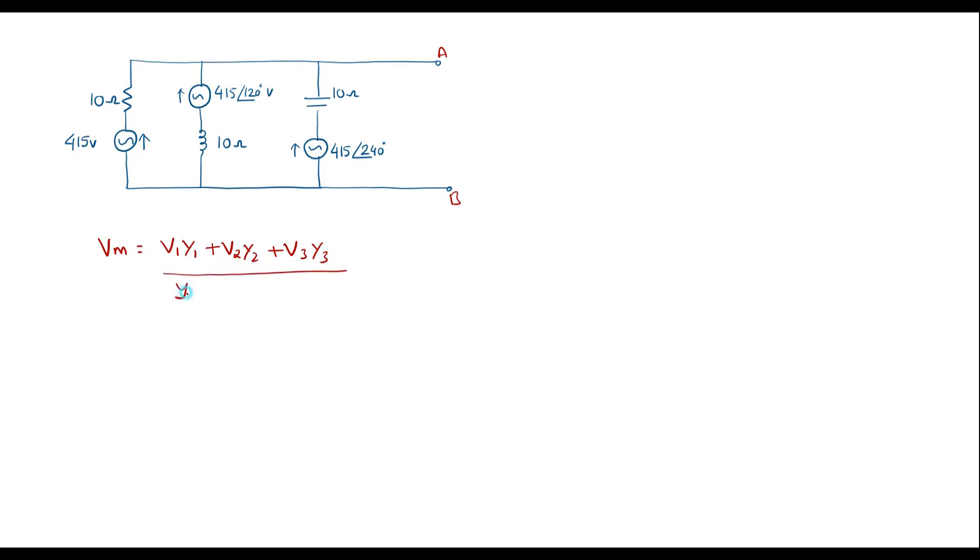Here V1 is nothing but 415 volt. V2 is nothing but 415 at an angle of 120 degree and V3 is 415 at an angle of 240 degree.